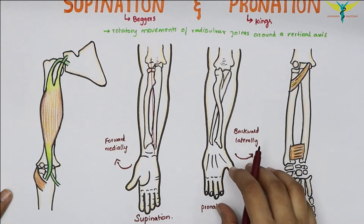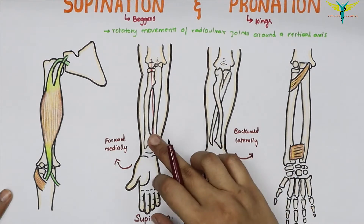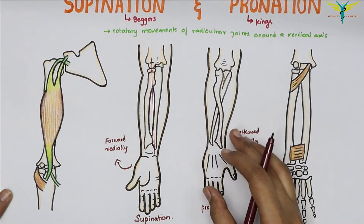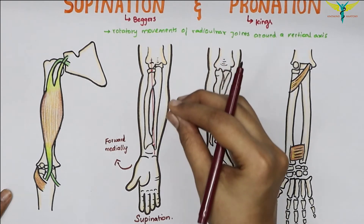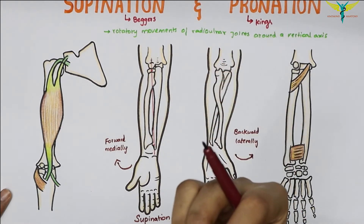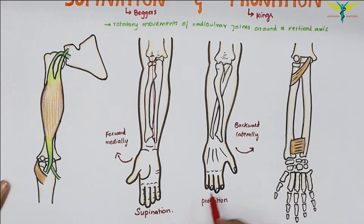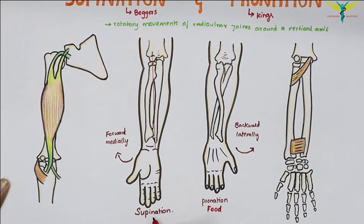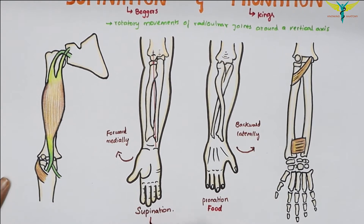Morphologically, the movements of supination and pronation evolved for picking up food and taking it into the mouth. So for easy remembrance: picking up food and putting it in the mouth is the supination movement.